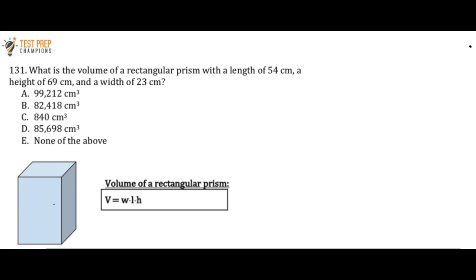What is the volume of a rectangular prism with a length of 54 centimeters, a height of 69 centimeters, and a width of 23 centimeters? Is the answer A, B, C, D, or E?